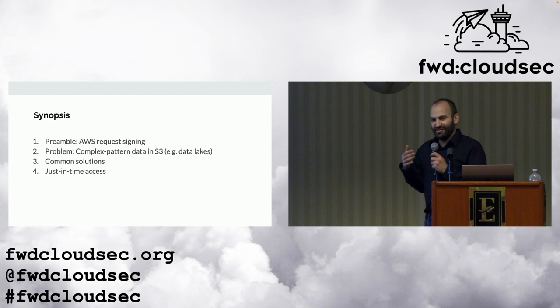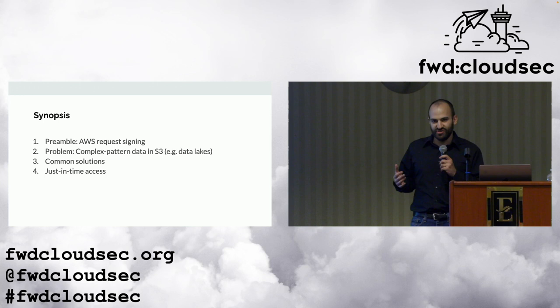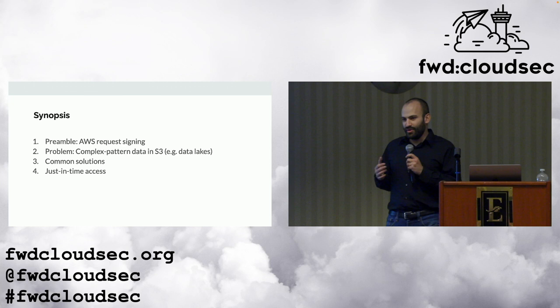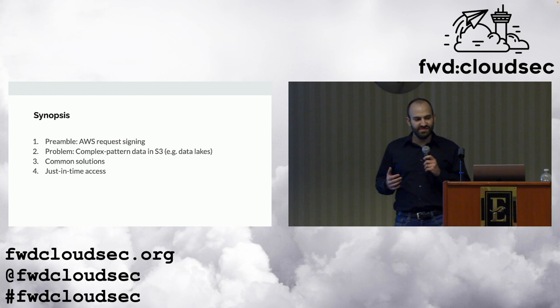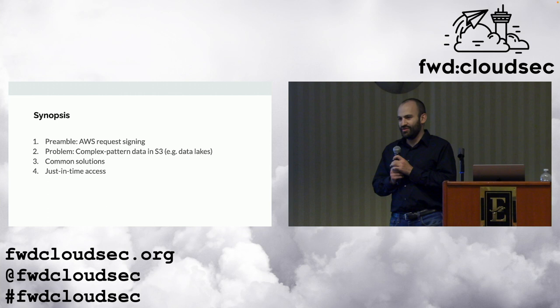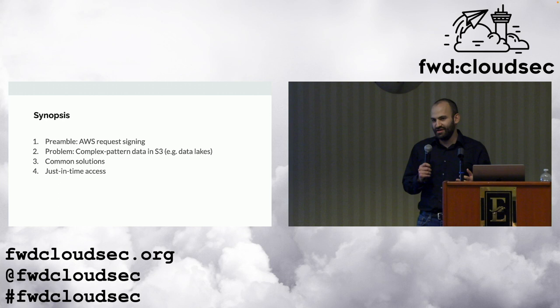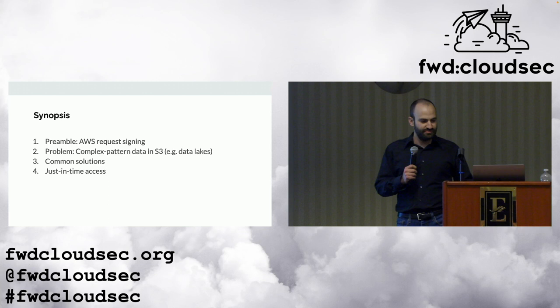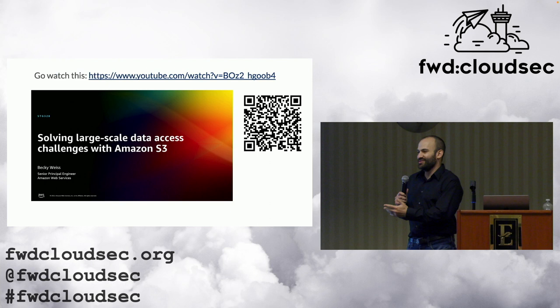We're going to discuss how requests in AWS are signed — we'll come across a couple of surprises along the way. We'll introduce a problem of data that is a little too complex to model with existing authorization tools, discuss available solutions, and then discuss one solution based on just-in-time access that's rather less known and deserves consideration once all the other solutions are exhausted.